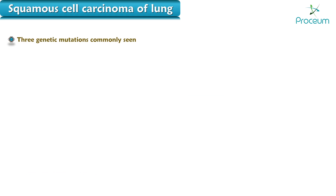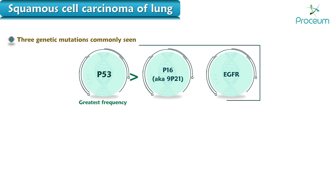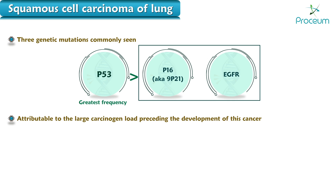Three genetic mutations are commonly seen in squamous cell carcinoma of the lung: p53, p16, and EGFR. Of all the lung carcinoma types, squamous cell carcinoma shows the greatest frequency of p53 mutations. This is partly attributable to the large carcinogen load preceding the development of this cancer.